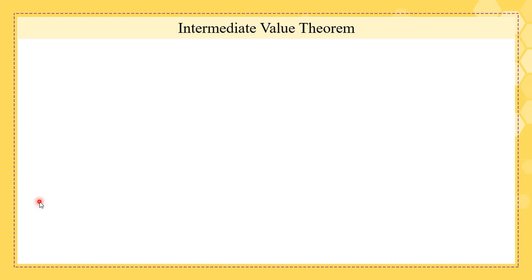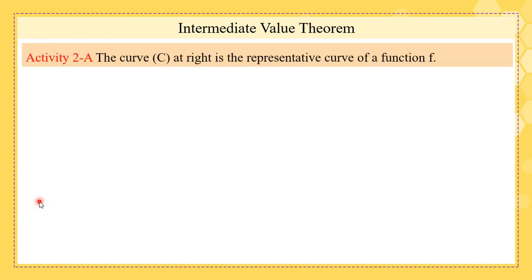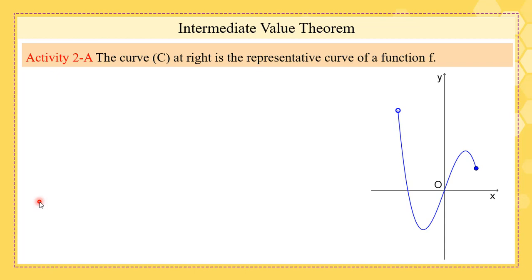Let's continue talking about the Intermediate Value Theorem, Activity 2a. We have a curve that represents a function f. This is a, this is d, this is b, this is f(b), this is c, this is f(c), this is e, this is f(e). Note that this is not f(a) because f is not defined at a — in this specific case we have an open point.